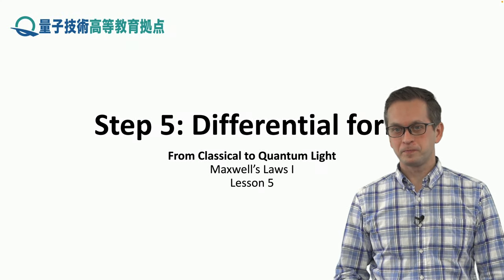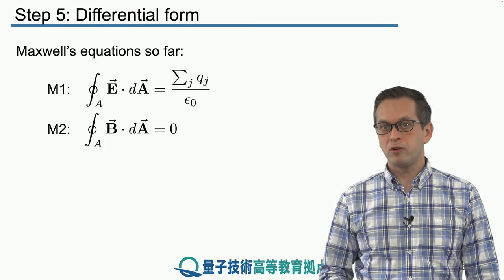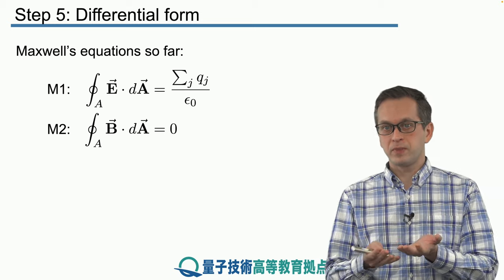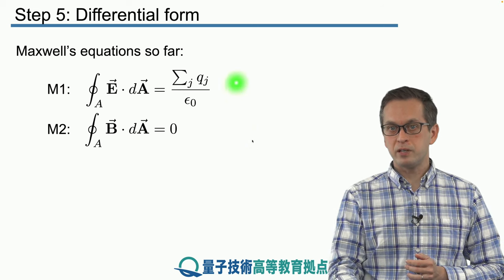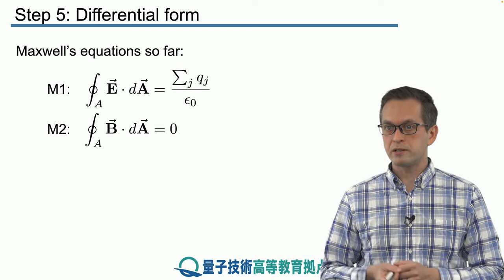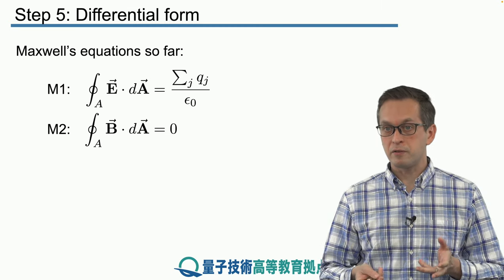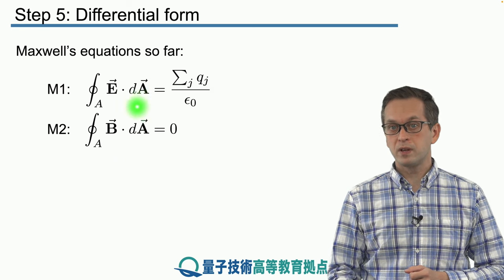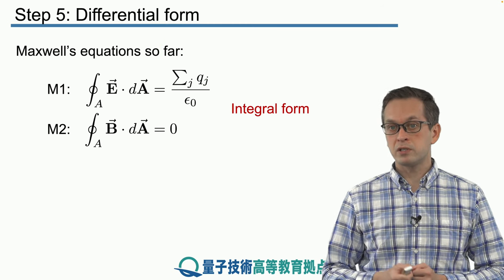Step five: differential form. We have introduced Maxwell's first and second equation in the form of integrals. We considered an integral over a closed surface and wanted to know how much electric field passes through it — that was Maxwell's first equation, the sum of all charges enclosed by the surface divided by epsilon naught. For the magnetic field, the flux through the closed surface was zero. Because these laws are formulated as integrals, they are known as the integral form.